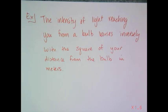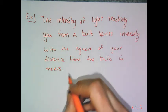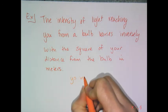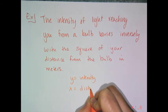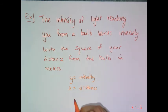For a science example of inverse variation, we have the intensity of light. The intensity of light reaching you from a bulb varies inversely with the square of your distance from the bulb in meters. I can write a generic equation for this relationship. If I say y equals the intensity and x equals the distance, then my equation is going to be y equals k over x squared.